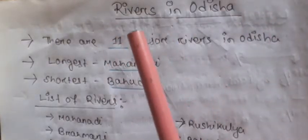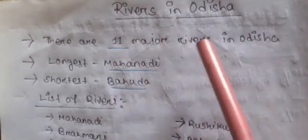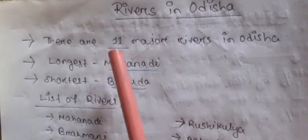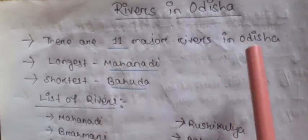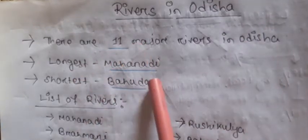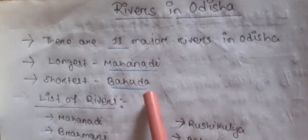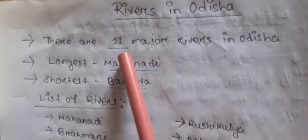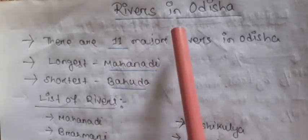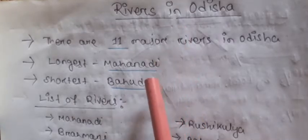Today we discuss about rivers in Odisha. There are 11 major rivers in Odisha. The longest one is Mahanadi and the shortest is Bahuda. Besides the 11 major rivers, Odisha also has many small rivers.